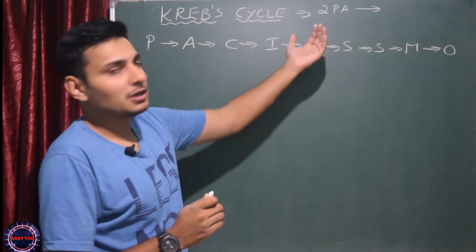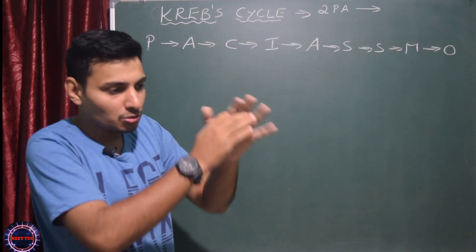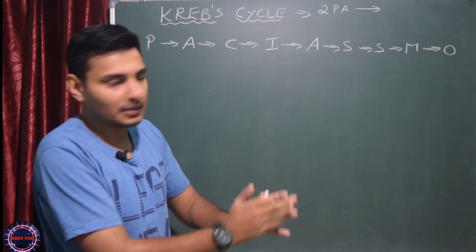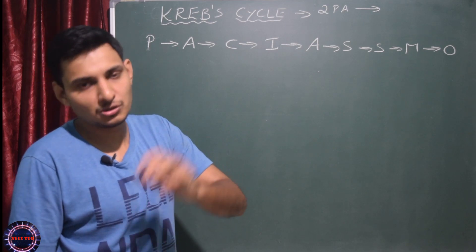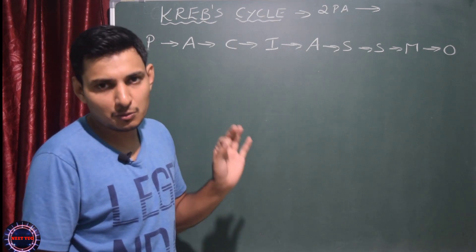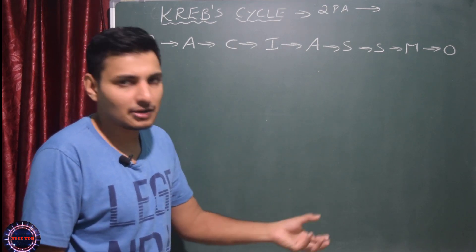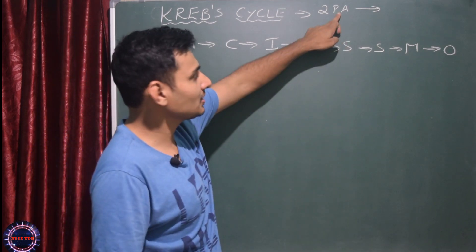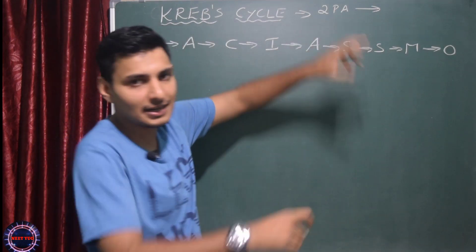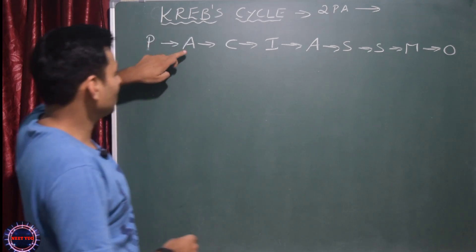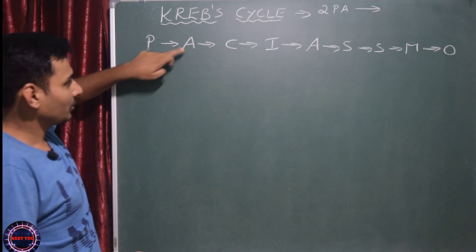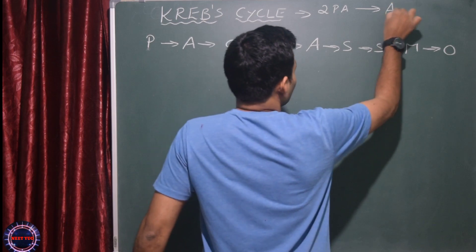P - pyruvic acid. Two pyruvic acids. What happens here? Decarboxylation takes place in the mitochondrial matrix. Two pyruvic acids are produced from glycolysis in the cytoplasm. They must be loaded into the mitochondrial matrix.